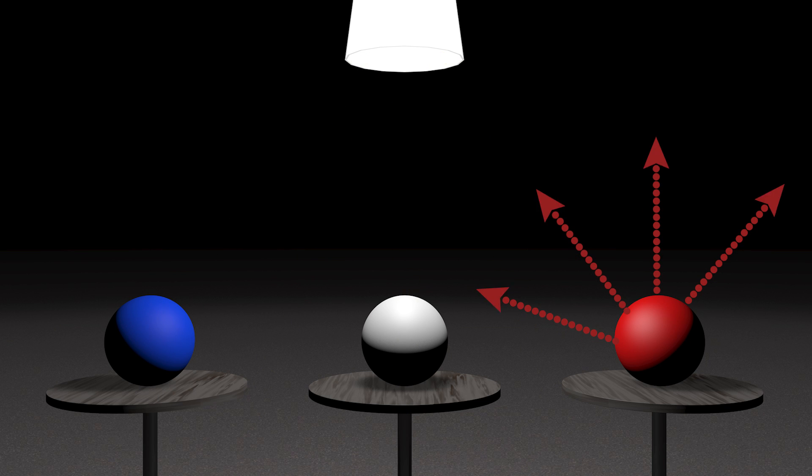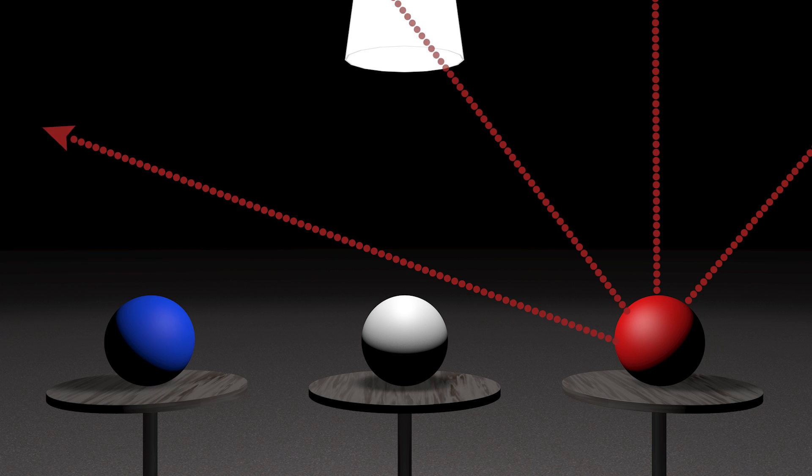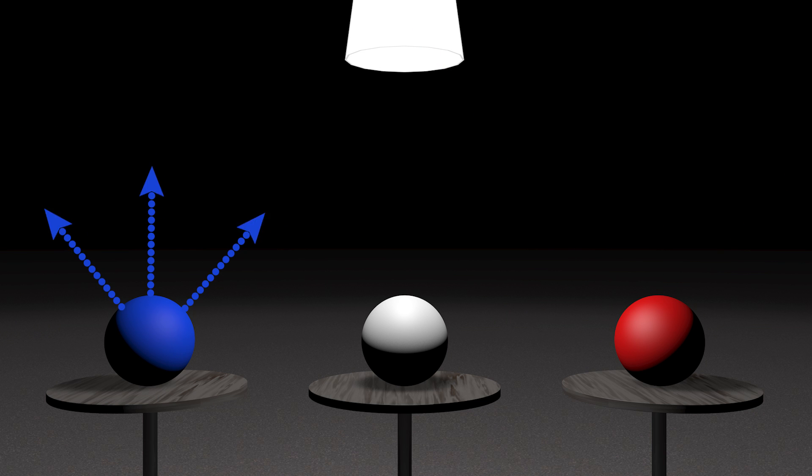But red ball reflected only red color and blue ball reflected only blue color. What happened to other colors that fell on these balls? They absorbed it and did not come out. Red ball absorbed everything except red light and blue ball absorbed everything except blue light. Why?